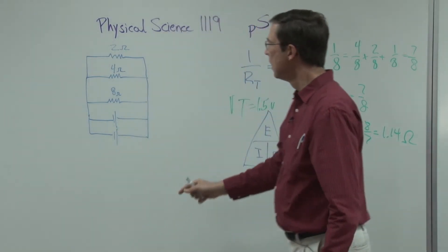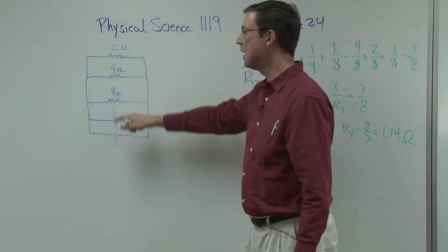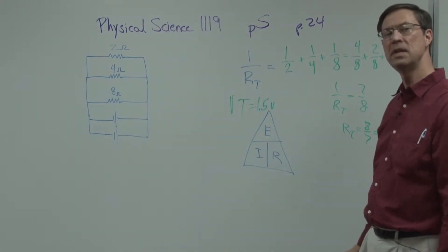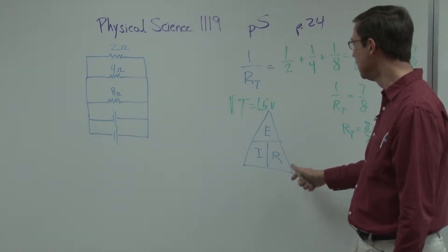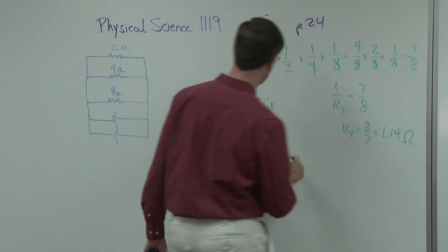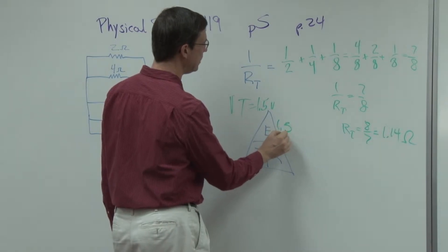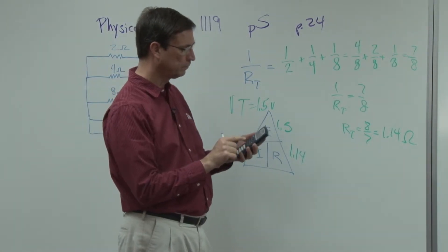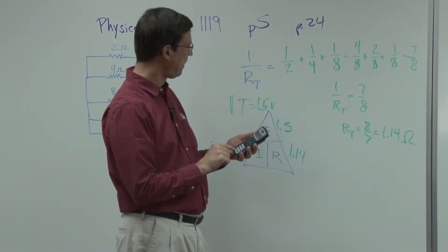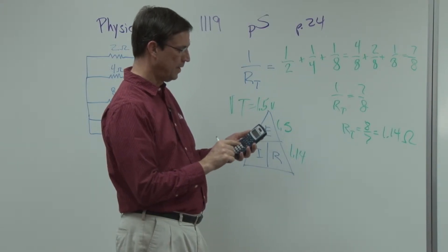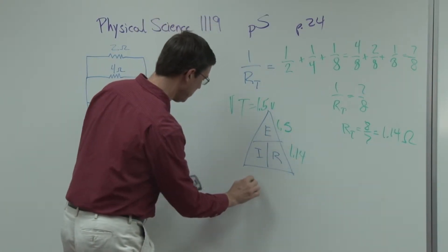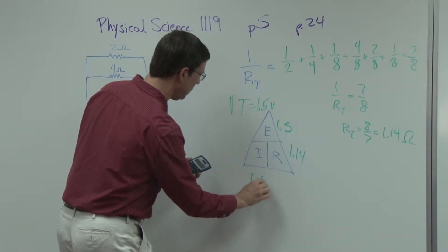So notice what happened. I have 2, 4, and 8. Those are kind of big numbers, but you put all those together, and the total resistance ends up decreasing in a parallel circuit. So the total resistance is 1.14, and now I can divide 1.5 divided by 1.14. And so the amps, the current flow is 1.14.